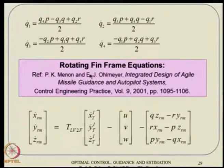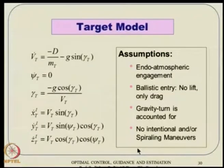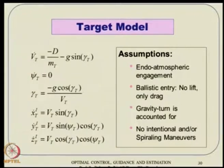More on the rotating frame concept can be found in the reference. The target model is typically a point mass model, because no sensors currently available can give six-DoF level detail of target dynamics. But you can certainly get information at the point mass level, which becomes sufficient. This point mass model has three dynamic components and three kinematic components, everything in 3D.